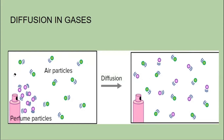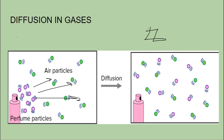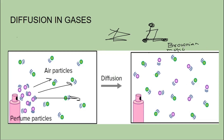What happens when the particles evenly distribute themselves and there is no difference in concentration left? After that, the particles will not follow a particular direction. Before, they were moving from higher to lower concentration, but now that they are uniformly distributed, the particles will just move in a haphazard zigzag way — moving in a straight line, hitting another particle, bouncing back, hitting another, hitting the wall of the container, and so on.